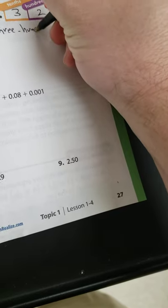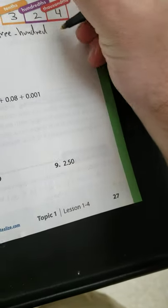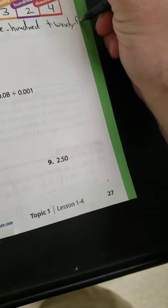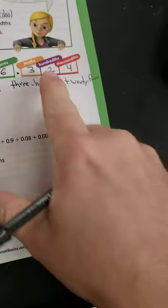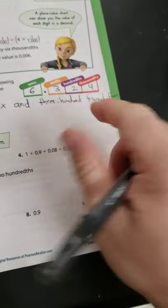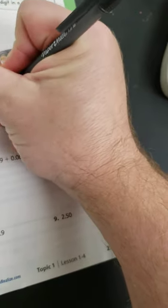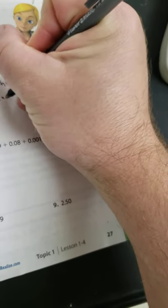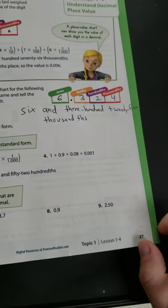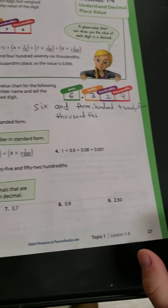Three hundred twenty four. And then we name it by the last decimal where it lands. Thousandths. So it's six and three hundred twenty four thousandths. And that's where decimal. So it's T H S. So six and three hundred twenty four thousandths.